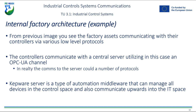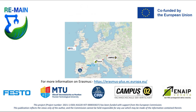The factory assets communicate with the controllers via various low-level protocols, and the controllers communicate with the central server utilizing OPC UA. Sitting on top of that is a Kepware server — this is a type of automation middleware that can manage all devices in the control space and also communicate upwards into the IT space. Kepware can talk a number of various protocols and languages, and can be used to aggregate and interface with all the factory data and send it off into the IT space.